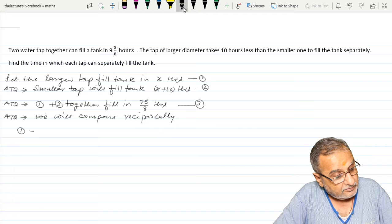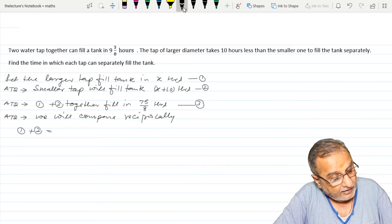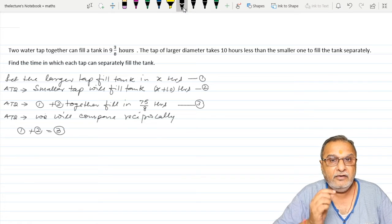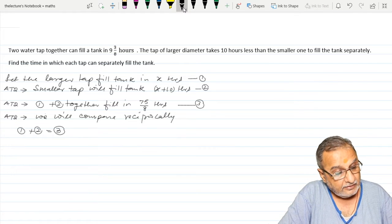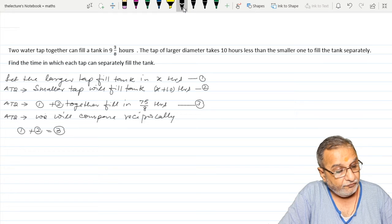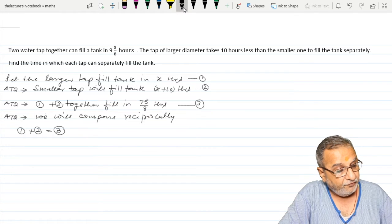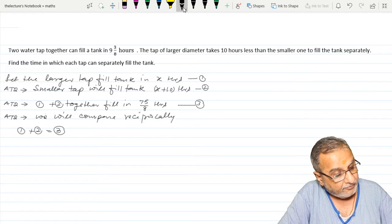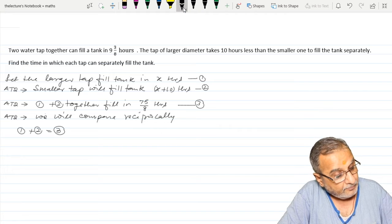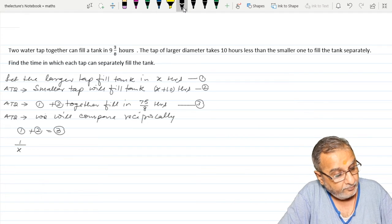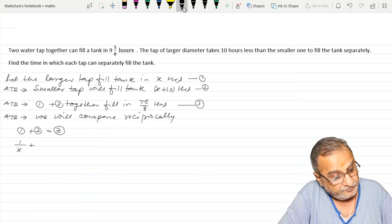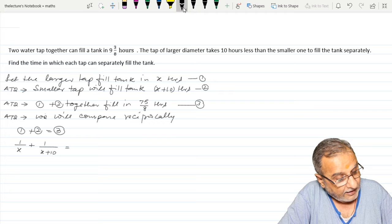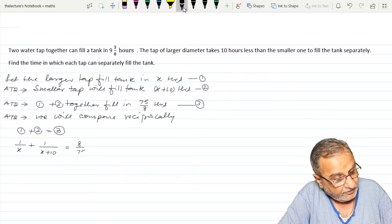One plus two is equal to three. Why is this? Because we need to find for one hour, while here X hours fills the larger one, X plus 10 hours fills the smaller one. So we will compare for a unitary. That is why we have reciprocally compared. So that is 1 upon X plus 1 upon X plus 10, that equals 8 upon 75.